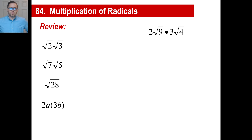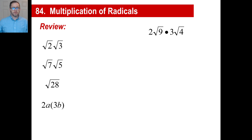Hey everybody, let's take a look at multiplying radicals. We have two parts to 84, so let's look at the old stuff first. The square root of 2 times the square root of 3 — the answer is the square root of 6.